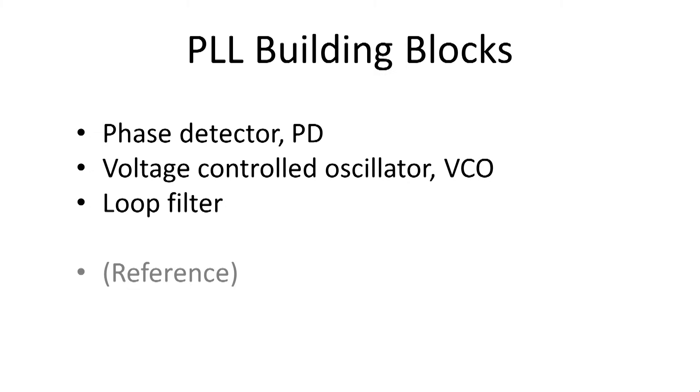Let's look at the building blocks first. There are three main elements in the loop. There's the phase detector, voltage-controlled oscillator, and the loop filter. And I suppose one could say that the reference generator outside the loop is also important, but it's not part of the loop itself. So let's look at these elements in turn.